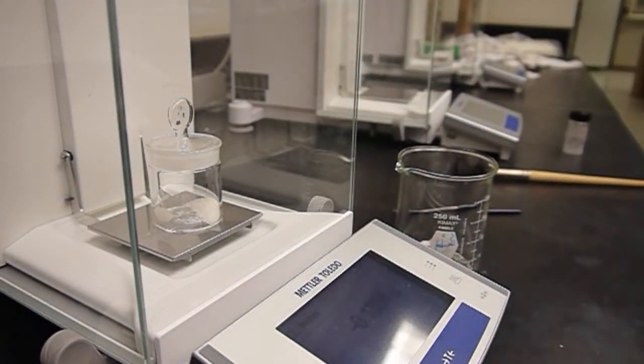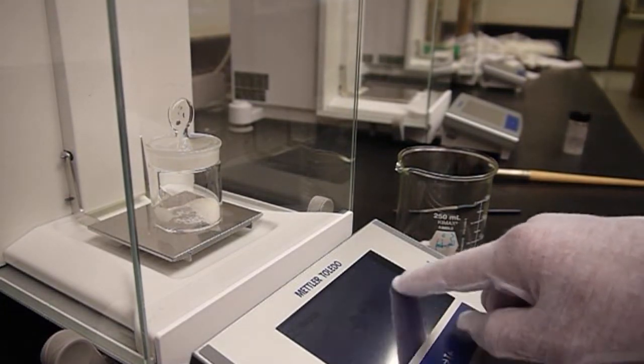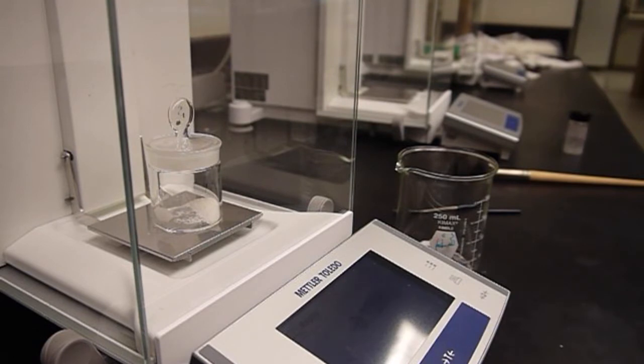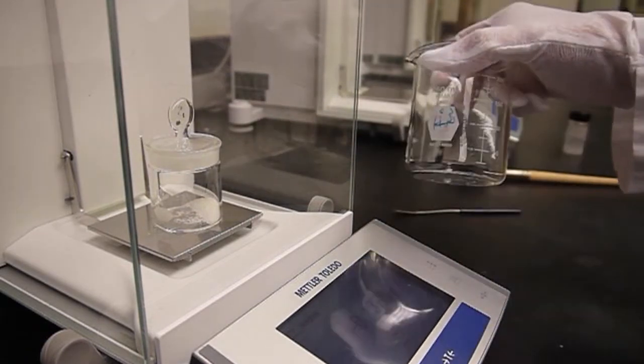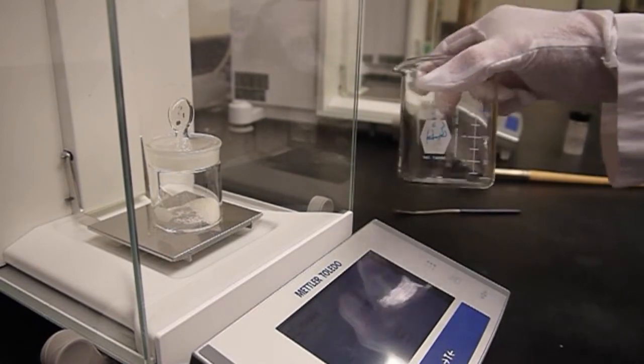Now I've removed mass. I'm getting a negative value on the balance, which is great because this number I'm reading here tells me the mass that I've transferred into the beaker. This is the mass I'm going to dissolve in water and use during the titration.